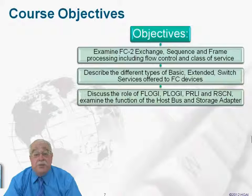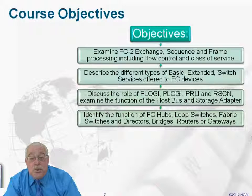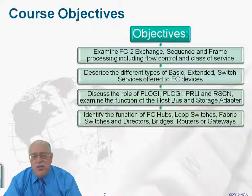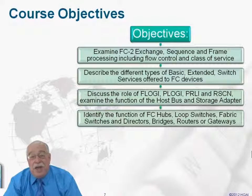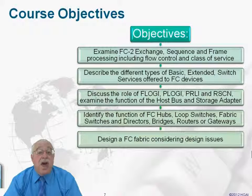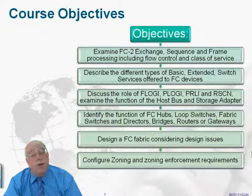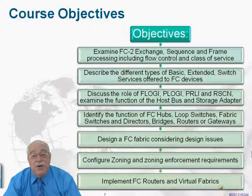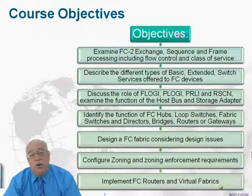We'll focus specifically on the login processes that occur within fiber channel. From a components point of view, we'll define and take a look at hubs, and loop switches, and fabric switches, and directors — and some of the other kinds of devices out there: what the storage vendors call bridges, and routers, and gateways. We'll look at the design issues associated with the fabric, and take a look at zoning — not only zoning configuration, but zoning enforcement as well. We'll see how we implement fiber channel routers, not just switches but routers, and the idea of virtual fabrics — kind of like the idea of a virtual LAN, or what Cisco calls a vSAN.